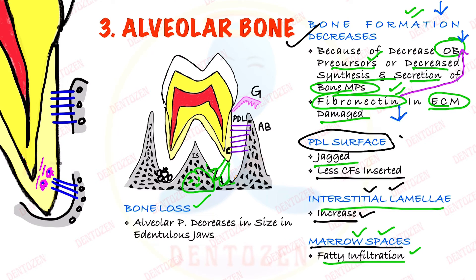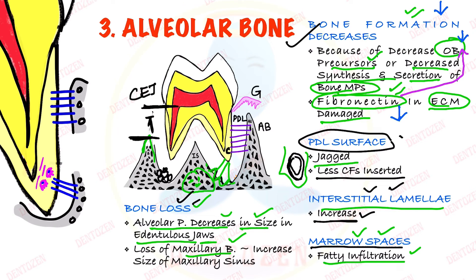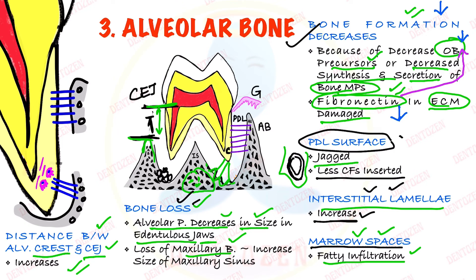Regarding bone loss, the alveolar process decreases in size with age. In edentulous jaws where teeth have been lost, the size of the alveolar process decreases. And because maxillary bone is lost, the maxillary sinus inside it increases in size. Another important thing to remember: the distance between the alveolar crest and the cementoenamel junction increases with age.